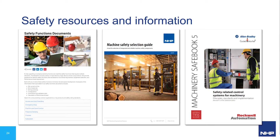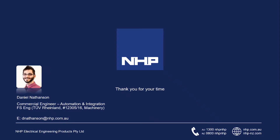That concludes today's presentation on safety applications. For more in-depth examples, head over to Rockwell Automation's webpage on safety function documents, which includes application technique documents with setup and wiring, bill of materials, configuration, verification and validation plans, and performance level calculations. For more information on machine safety in general, the NHP machine safety selection guide is available. I also highly recommend reading through the Rockwell Automation Machinery SafeBook 5, which provides fantastic guidance on designing and navigating machine safety control systems.